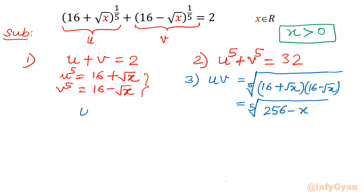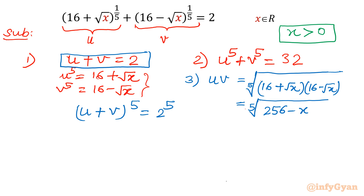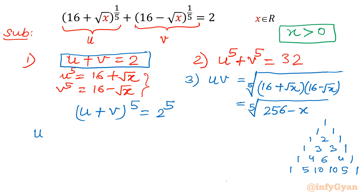Now let's begin by writing (u + v)⁵ = 2⁵. I took the first equation and raised both sides to the power 5. Pascal's triangle is about to come: 1, 1 1, 1 2 1, 1 3 3 1, 1 4 6 4 1, and the required coefficients for power 5 are 1 5 10 10 5 1. Writing coefficients with u descending and v ascending: u⁵, then coefficient 5, u⁴v.